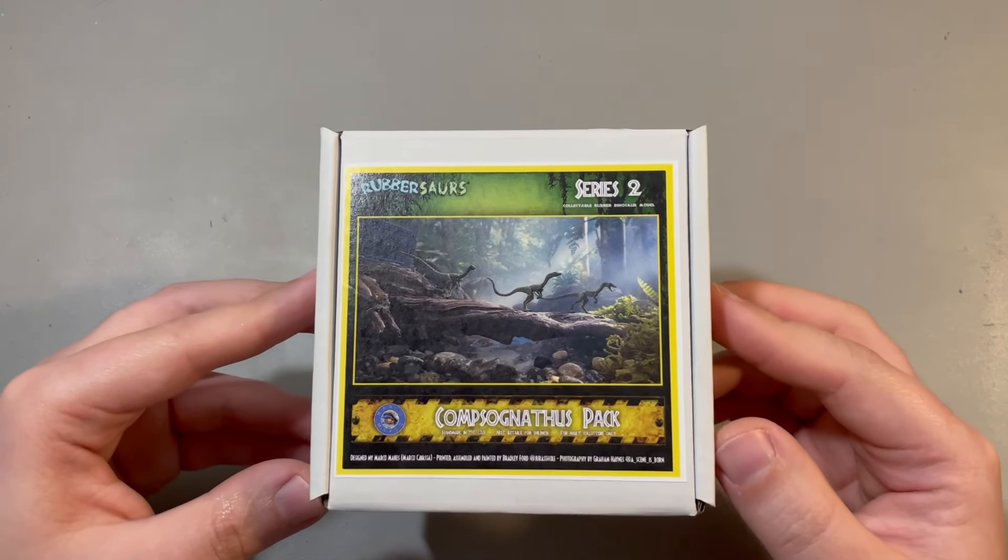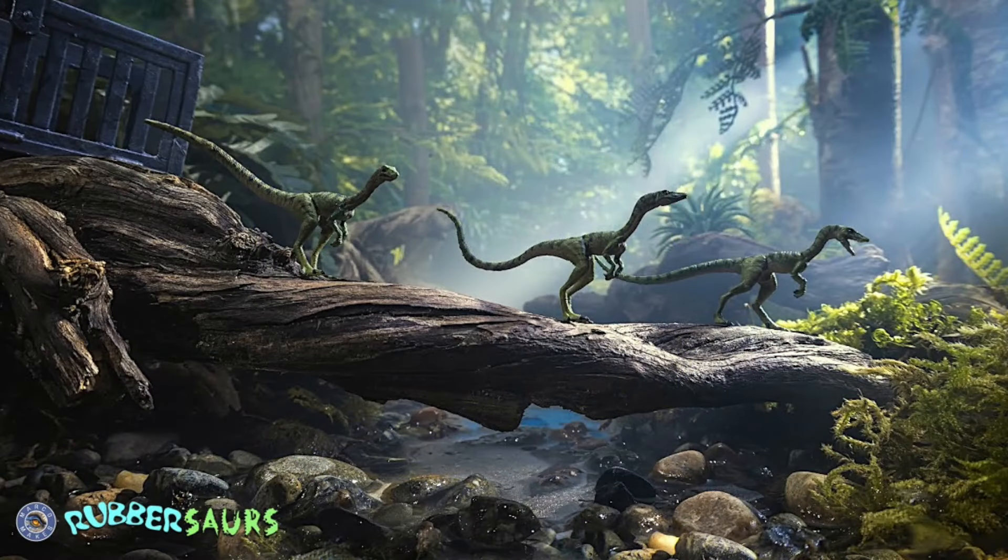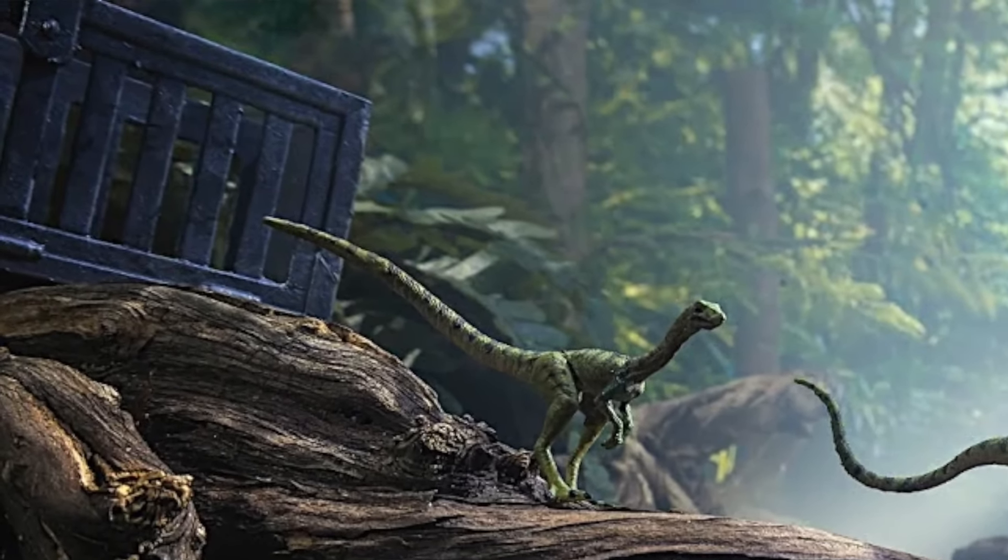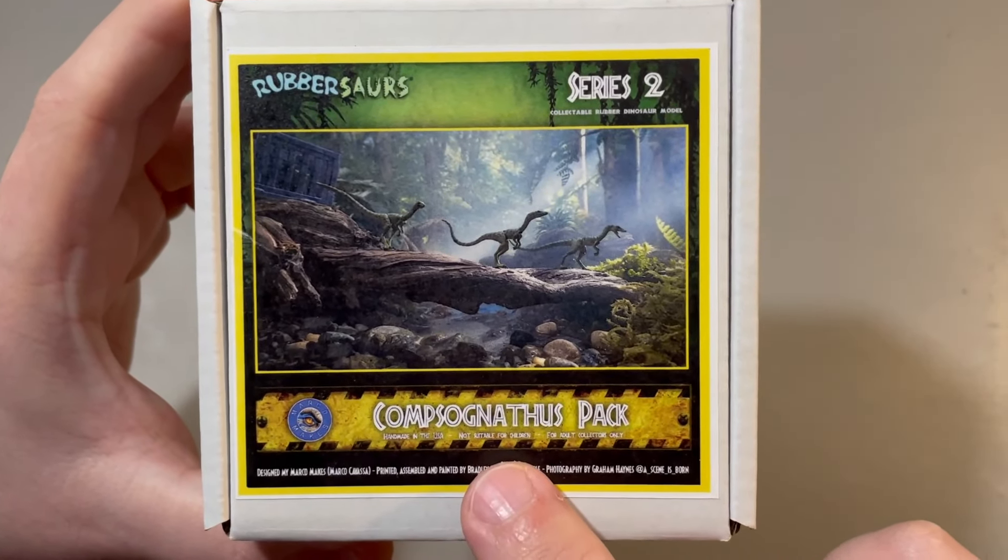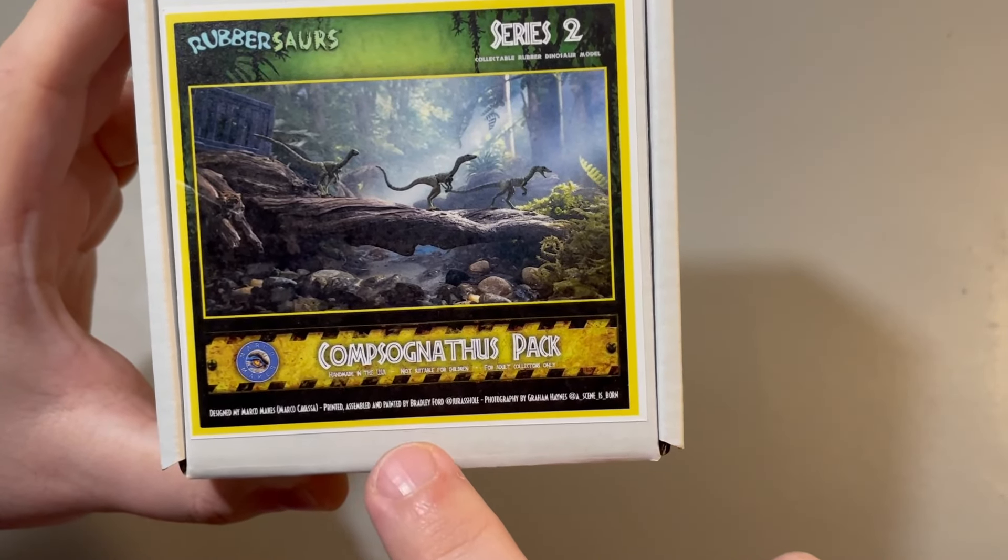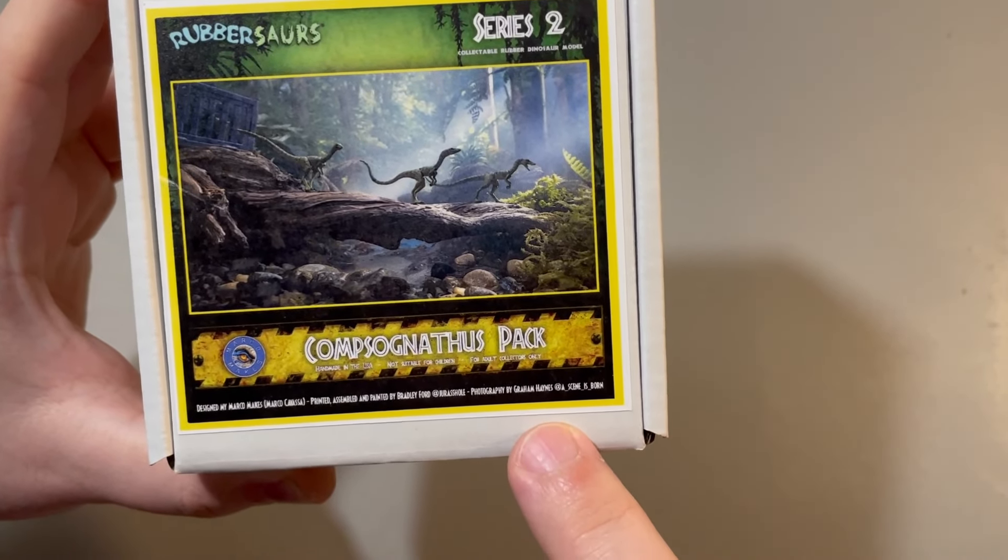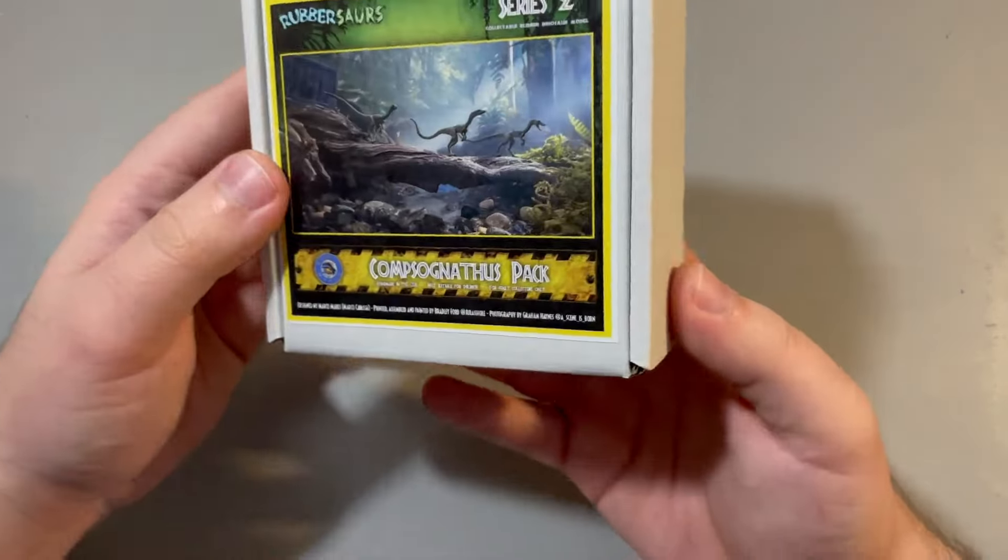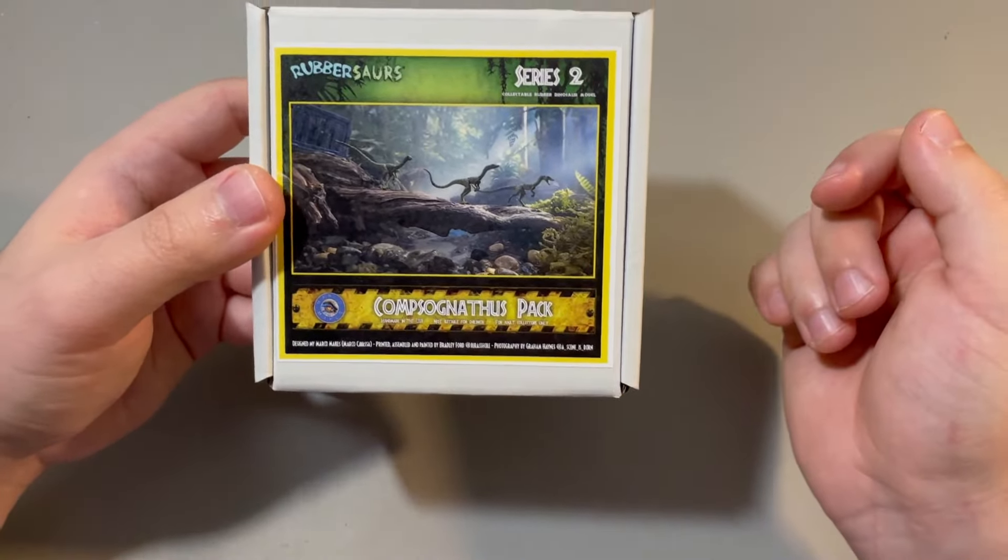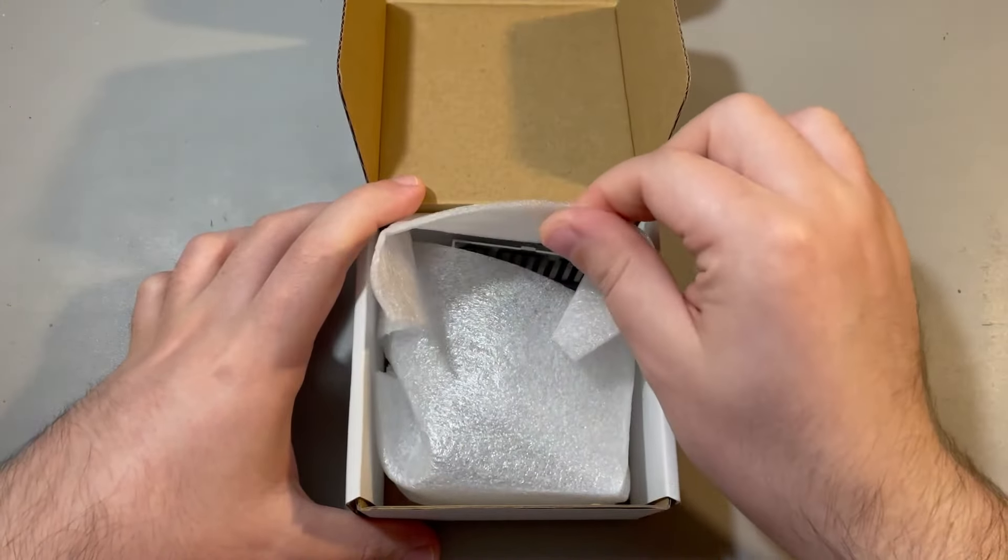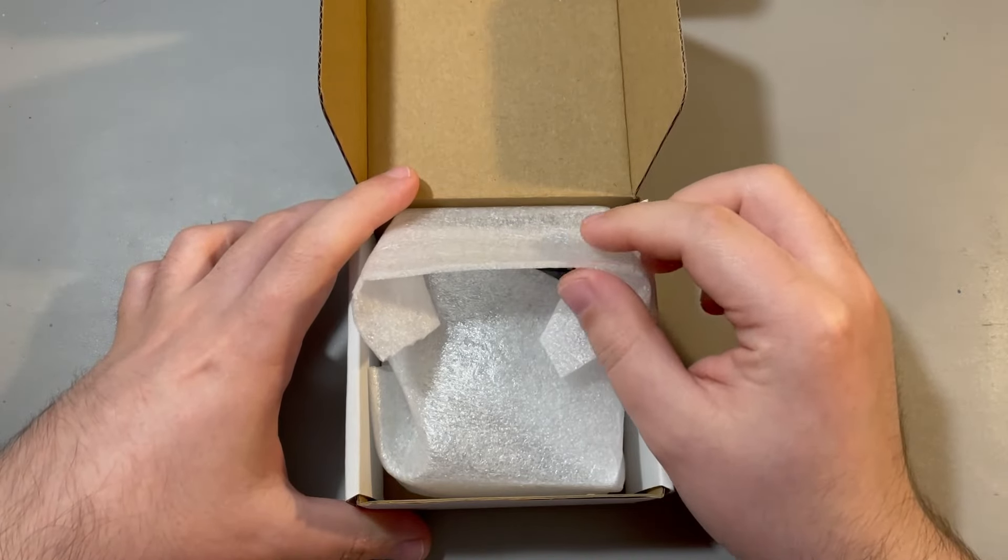They all need to pass some really rigorous quality checks as I'm very particular to what you guys end up getting, and so far Bradley has been amazing. So if we look at the box, you can see the lovely picture taken by As Seen As Born with a little Compy there. As you can see on the top left there is a little cage. It says handmade in the USA, not suitable for children, for adult collectors only. If we open it up, we're greeted by some foamy material to protect the insides.